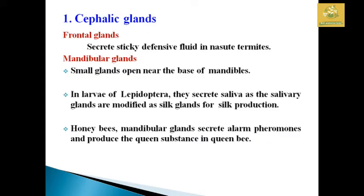Now I am going to explain about the cephalic glands of insects. They are the frontal as well as the mandibular glands. In frontal glands, a sticky defensive fluid is present in nasute termites. In mandibular glands, they are small glands which open near the base of mandibles, useful for grooming in insects. In larvae of Lepidoptera, they secrete saliva and the salivary gland is modified as a silk gland for silk production. In honeybee, the mandibular gland secretes an alarm pheromone which produces the queen substance in queen bees in the hive.